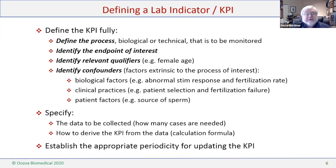KPIs and process control illustrate the crucial role of information systems in the labs. The basic principle is to work smarter, not harder. When you try to define a lab indicator or KPI, you need to define it fully: define the process — whether biological, technical, administrative — that you want to monitor, and then identify the endpoint of interest, which is the KPI itself. You also need to identify qualifiers that are important, such as female age for pregnancy rates and implantation rates, and then identify confounders.